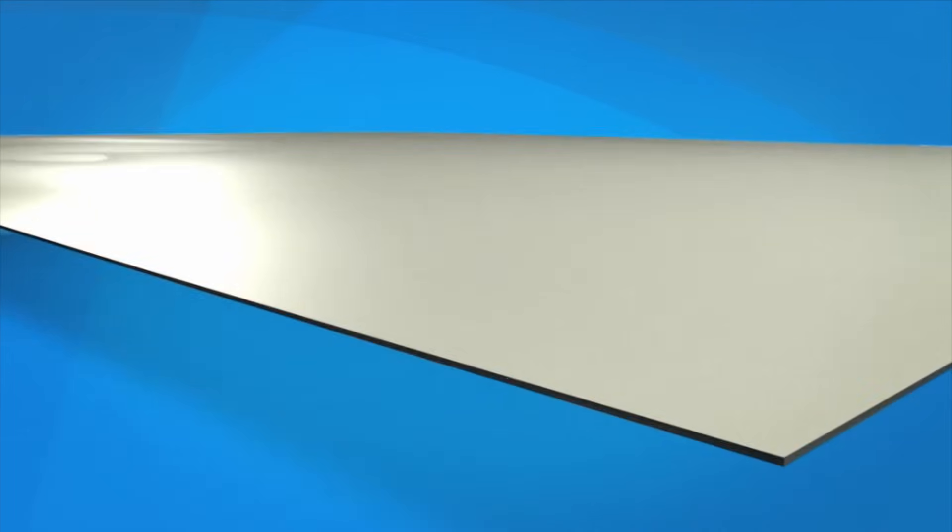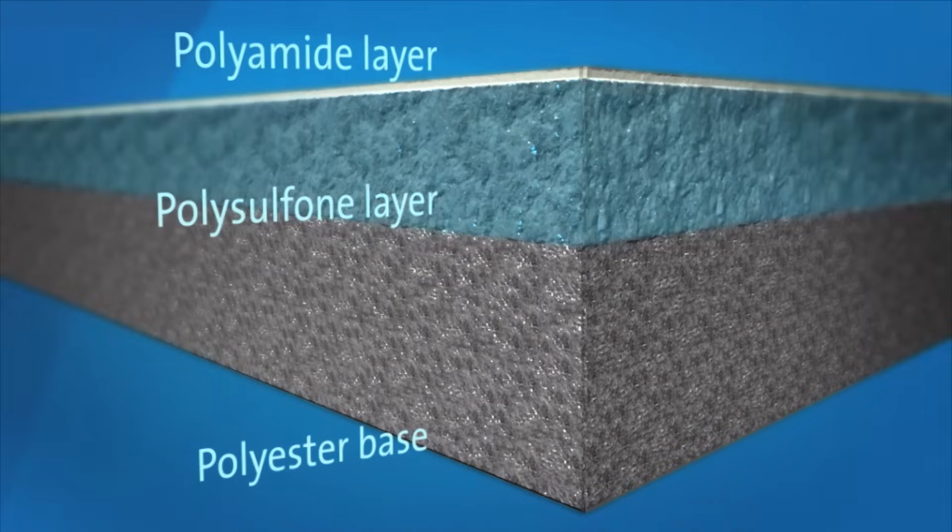Reverse osmosis membranes are constructed from a membrane flat sheet. It is comprised of three layers: a polyester fabric support base, a microporous polysulfone layer, and a 0.2 micron thick polyamide barrier layer.